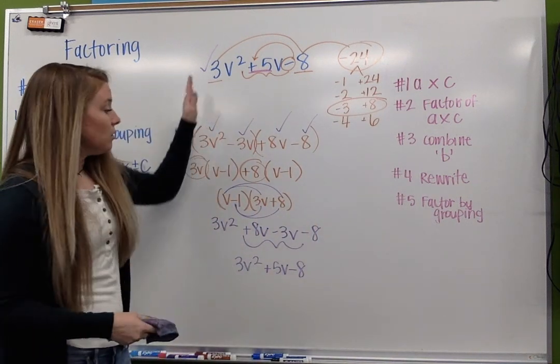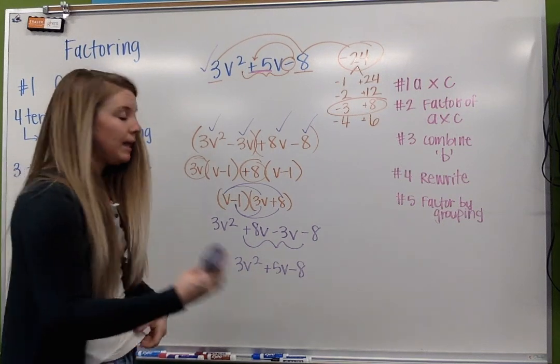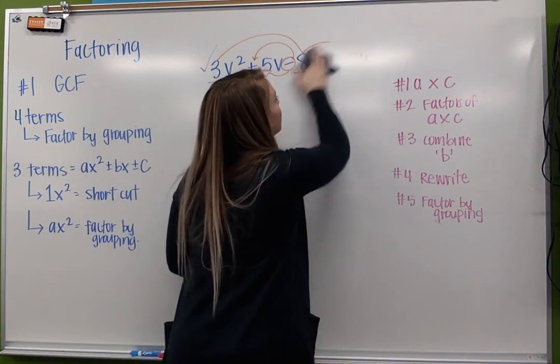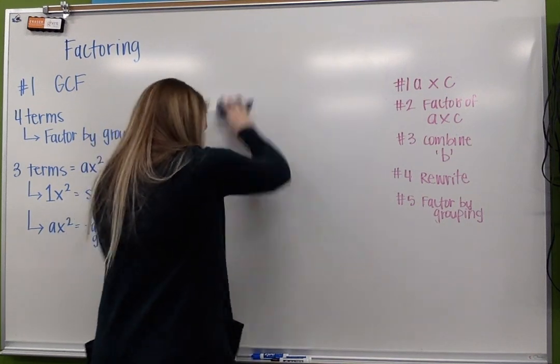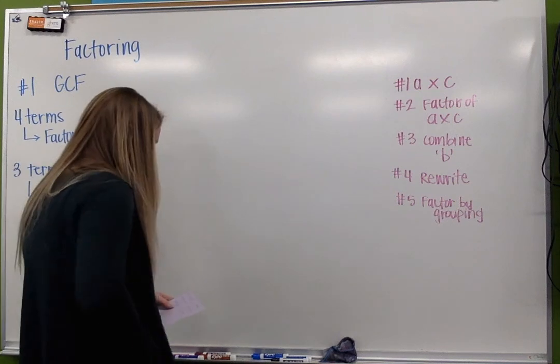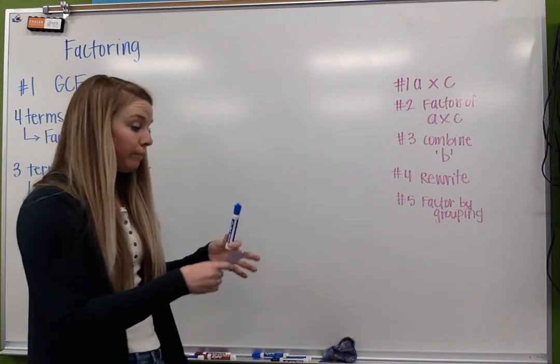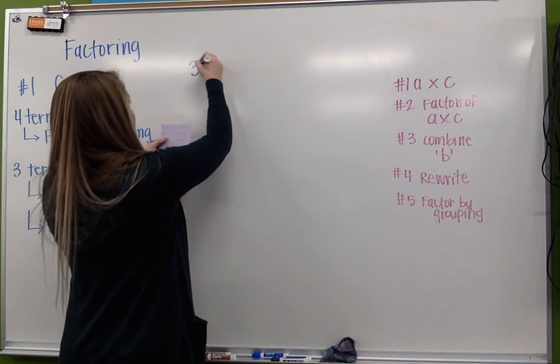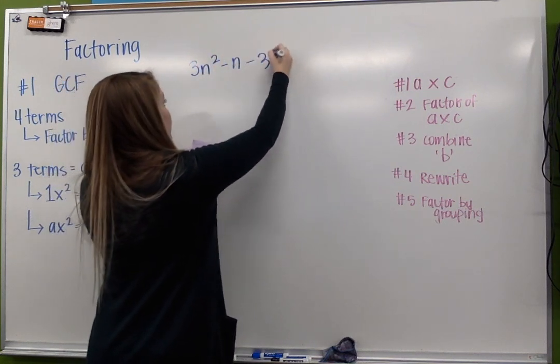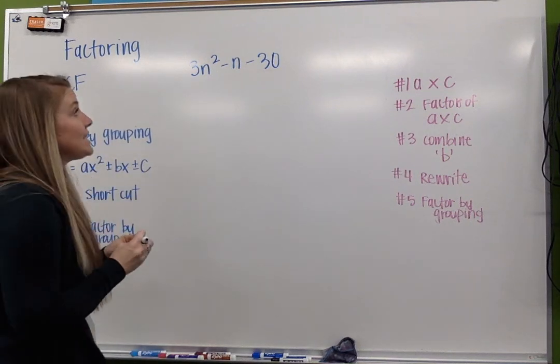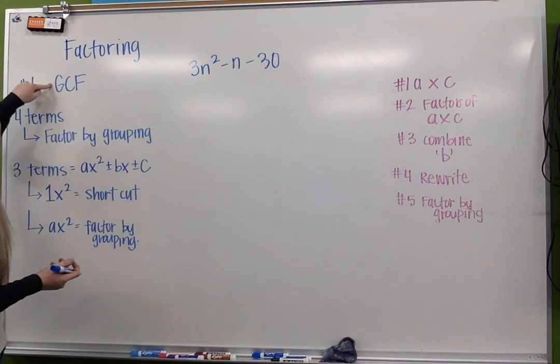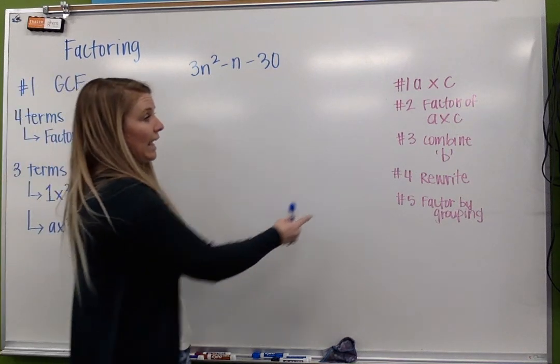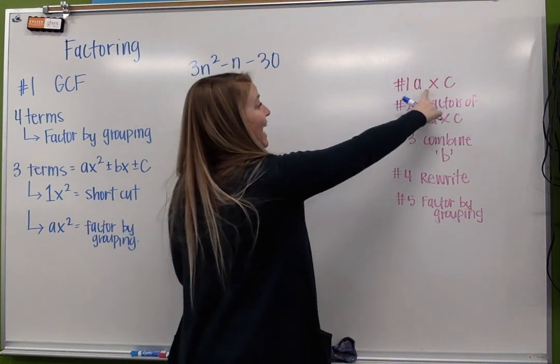So here's our next example. We'll run through one more, and then I'll get you some more examples on another video. So this one we're going to look at is 3n² - n - 30. Again, we can go through our checklist here. No GCF, not four terms. My leading coefficient isn't 1. So we're here, and we're ready to factor by grouping. And here are my steps to do so.